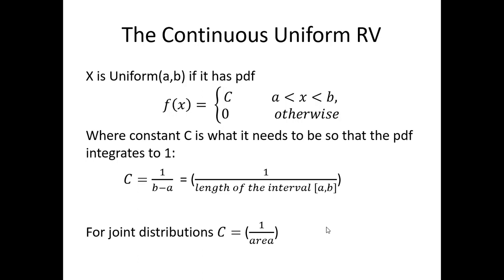For a uniform random variable x, if x is uniform from a to b, it has a PDF where f(x) equals a constant c for x between a and b. You can think of c as what it needs to be so that the PDF integrates to 1. That constant c equals 1 over (b minus a) — geometrically, 1 over the length of the interval. For joint distributions in a two-dimensional situation, the constant is 1 over the area of the support set.